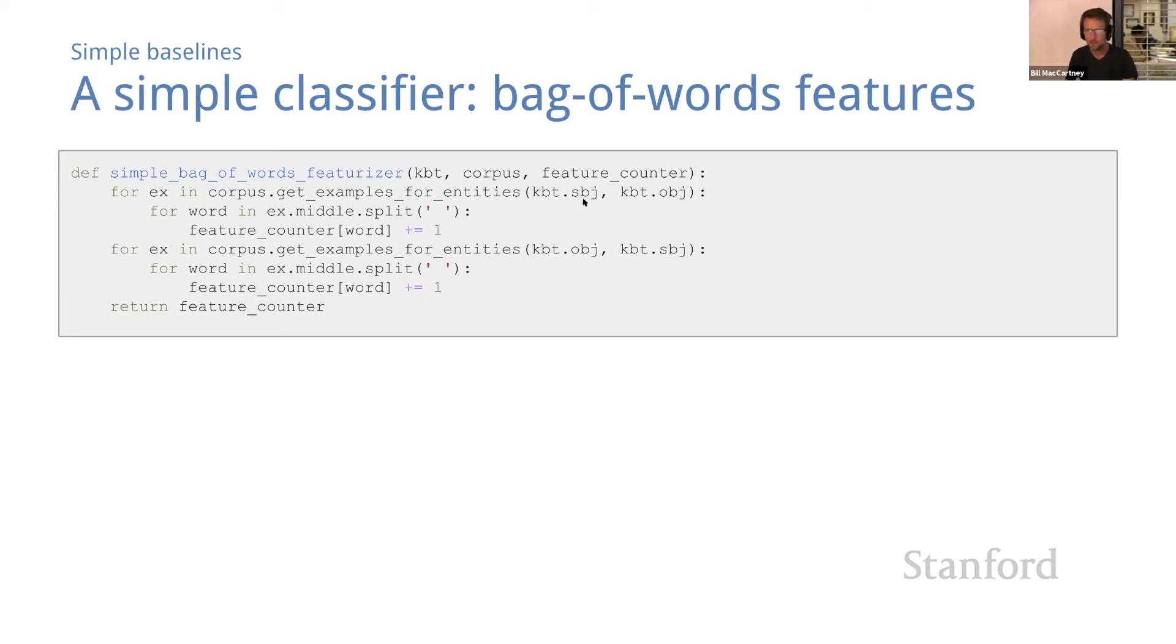For each example we look at the middle, we break it into words, and then we count up all the words. So a couple things to note here. One is that the feature representation for one KB triple can be derived from many corpus examples. And this is the point that I was trying to make last time—that we're using the corpus to generate features for a candidate KB triple. The role of the corpus is to provide the feature representation, and the feature representation for a KB triple will be based on all of the examples in the corpus that contain those two entities.